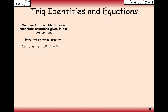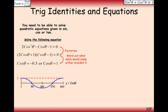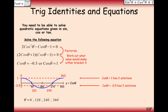Next: 2cos²θ − cosθ − 1 = 0. We factorise and set each bracket equal to zero, giving cos θ = −0.5 or cos θ = 1. Placing markers at 1 and −0.5 on the cosine graph, we get solutions at 0°, 120°, 240°, and 360°.